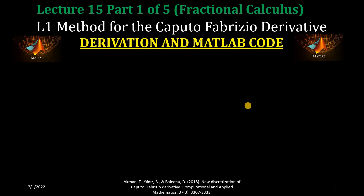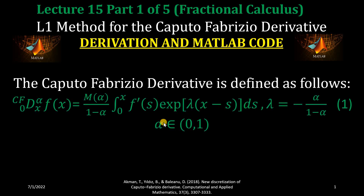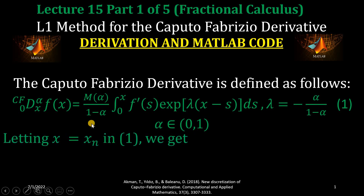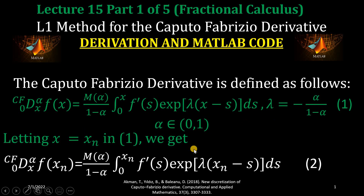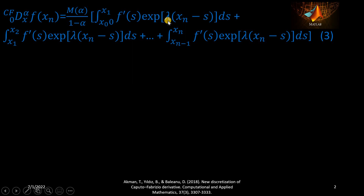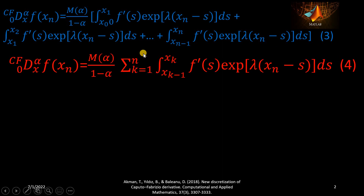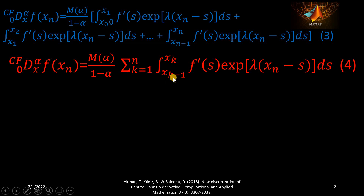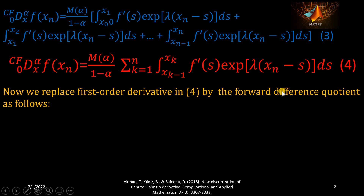We will derive the L1 method for the Caputo-Fabrizio operator and then its MATLAB code. This is the Caputo-Fabrizio differential operator as defined in equation 1. Replacing x by x_n gives equation 2, where the integration interval is from 0 to x_n. This interval is broken into several sub-intervals to obtain equation 3. In equation 4, summation notation is used to add all these integrals into a compact form, where putting values of index k recovers equation 3.